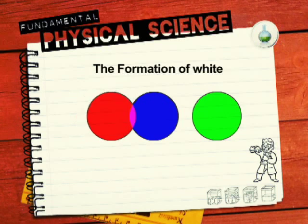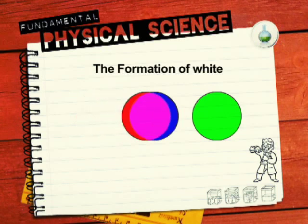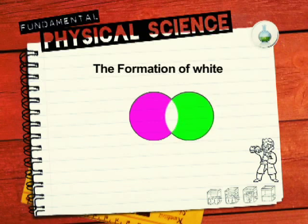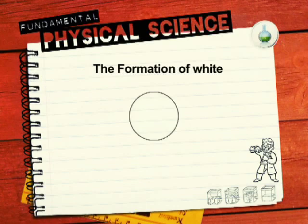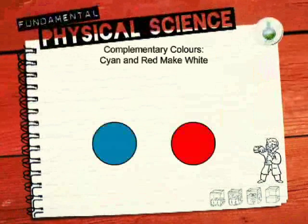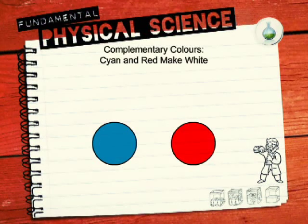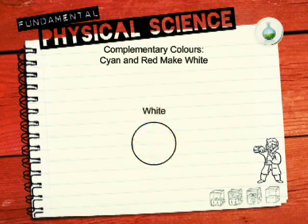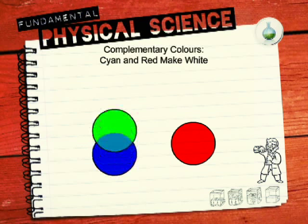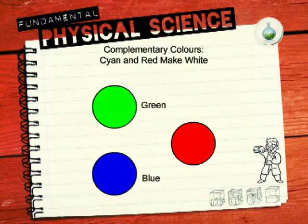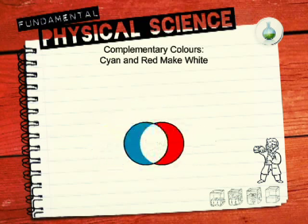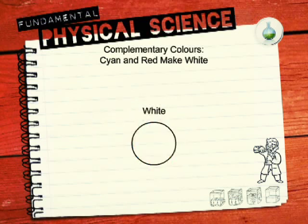White light can be made by combining all three primary colours. It follows that you can also make white light by adding one primary colour to the secondary colour created by the other two primaries. For example, white light can be made by adding red to cyan, since cyan is created by blue and green. The same principle applies to green and magenta, or blue and yellow. Any two colours that combine to form white light are called complementary colours.